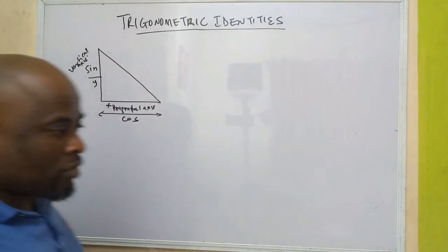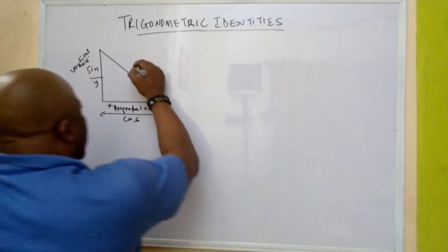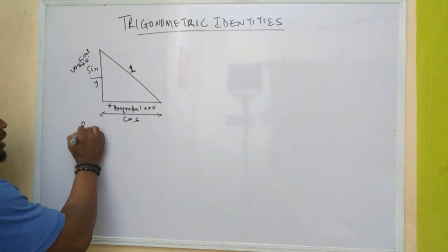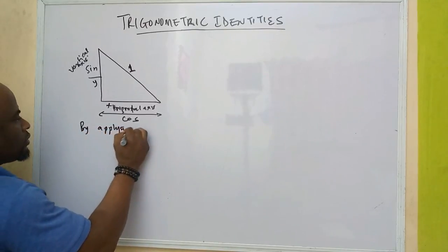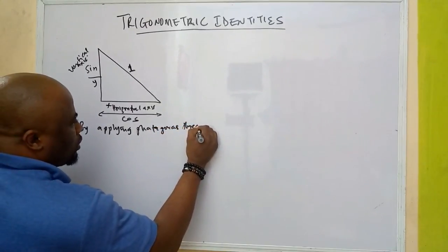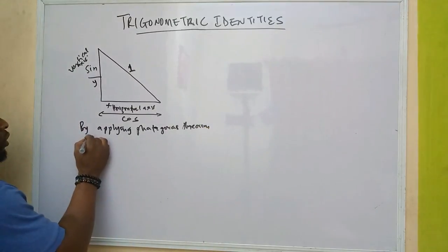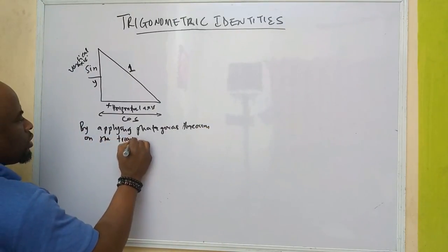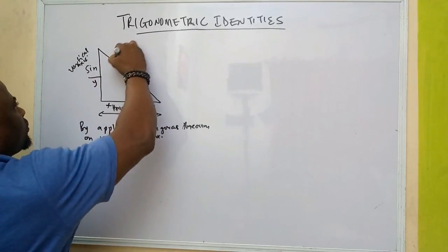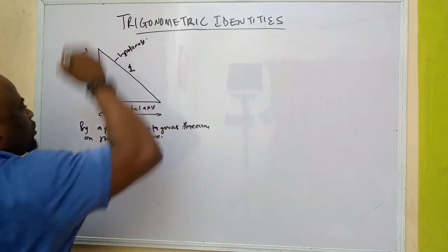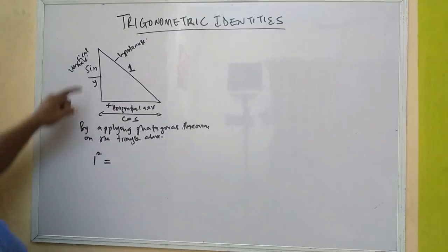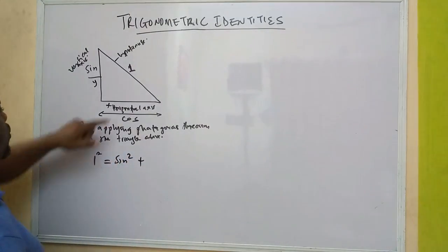So if we take this to our little circle, this side — by applying Pythagoras' theorem on the triangle above, we have this is the hypotenuse. So by Pythagoras' theorem, it means the hypotenuse side, which is here, one squared, because of the square of this side plus the square of this side.